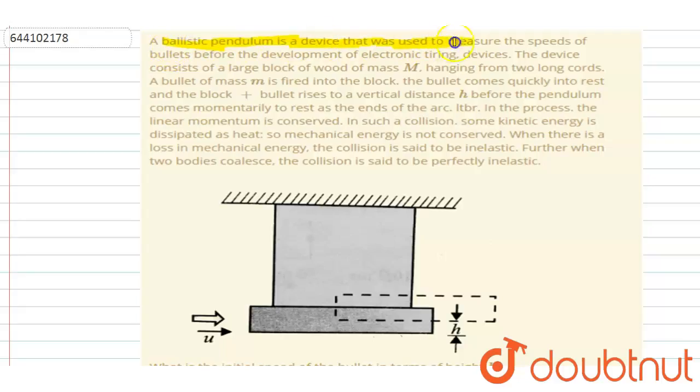a device that was used to measure the speed of a bullet before the development of electronic timing devices. You can see this is a device. Here's the large wooden block of mass capital M connected by two long cords. The bullet of mass small m is fired into the block and the bullet comes